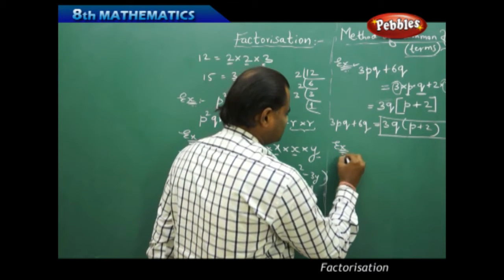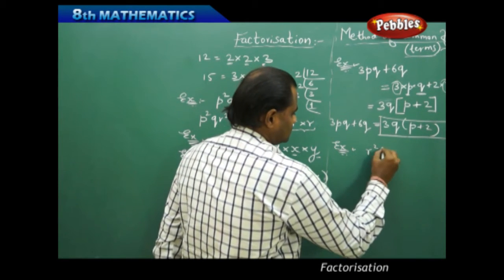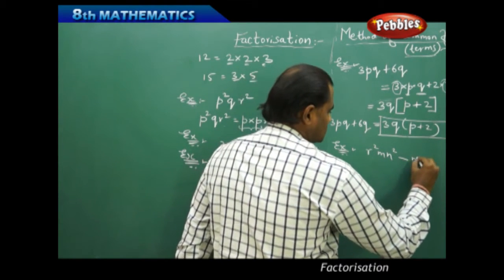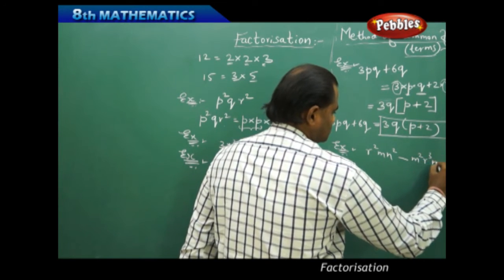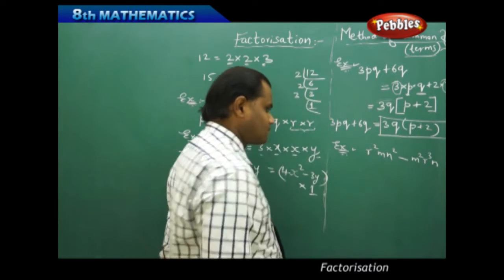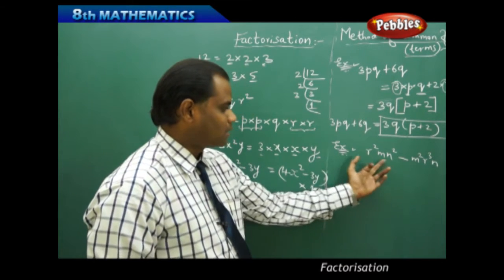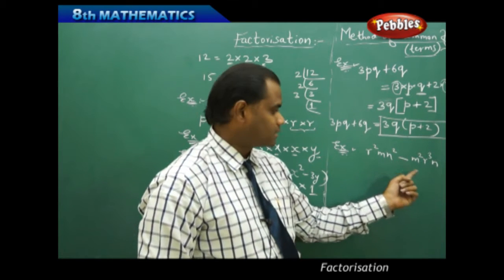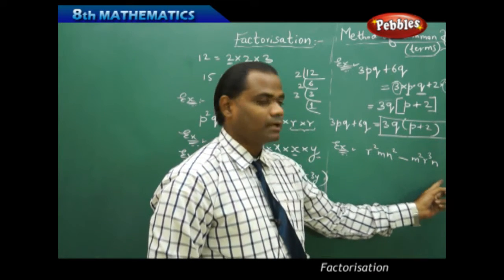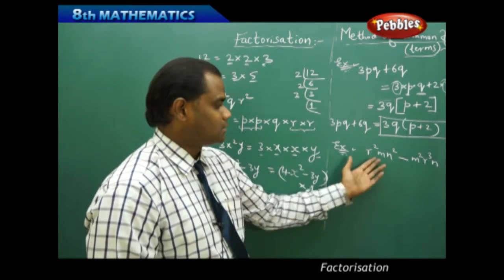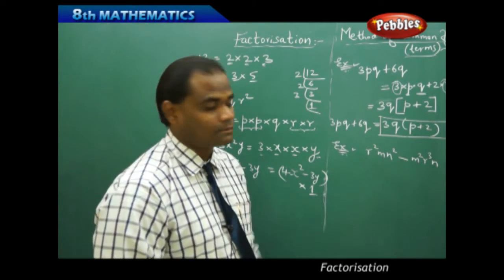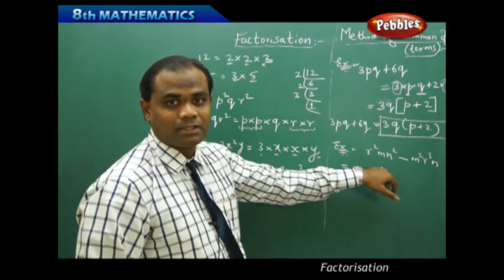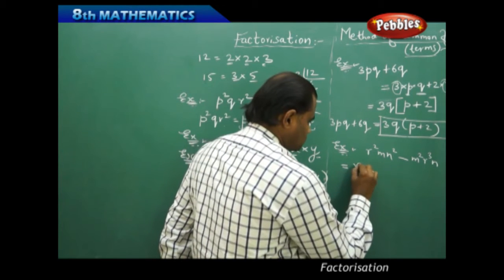Let's take another example: r²mn² − m²r³n. This expression has three unknowns — r, m, and n — and two terms. The first term is r²mn² and the second term is −m²r³n. We need to find the common factors between these two terms.